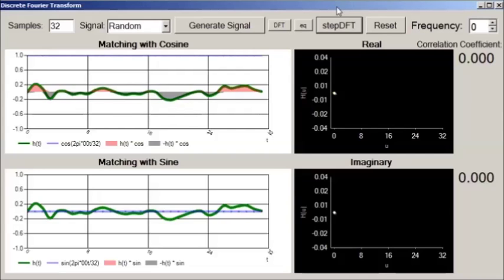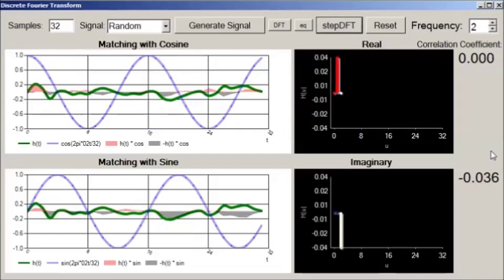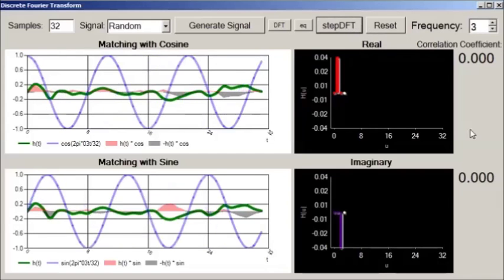If the signal is positively correlated with the sinusoid we are testing, this coefficient will be positive. If it is negatively correlated, it will be negative. If it is uncorrelated, it will be approximately zero.